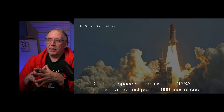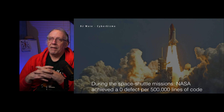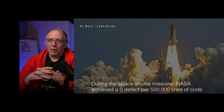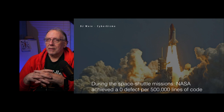But how well have we actually done? During the space shuttle missions, NASA actually achieved zero defects per 500,000 lines of code — a phenomenal amount of work and cost went into doing that. But can every business afford to do that kind of coding? Those are some very strict rules.